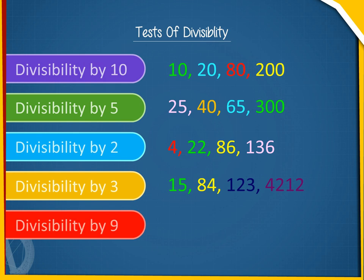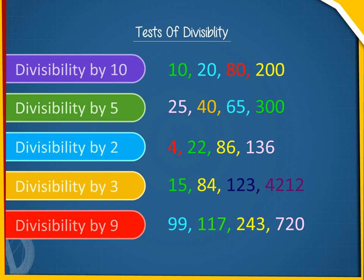5. Divisibility by 9. A number is divisible by 9 if the sum of all its digits is divisible by 9. For example, 99, 117, 243, 720.